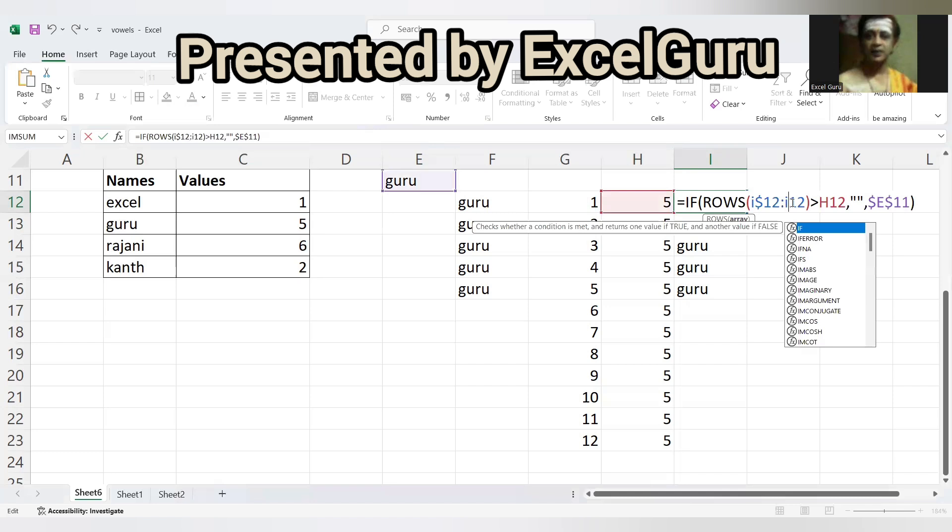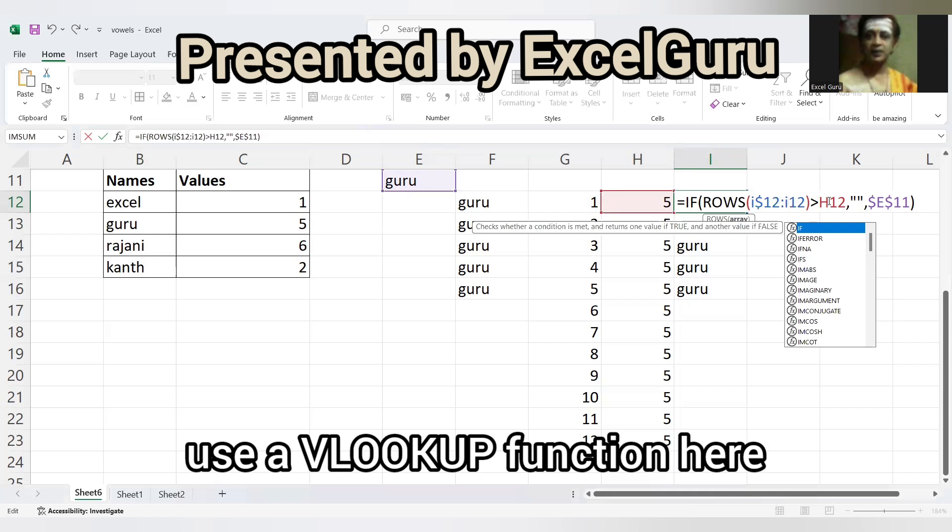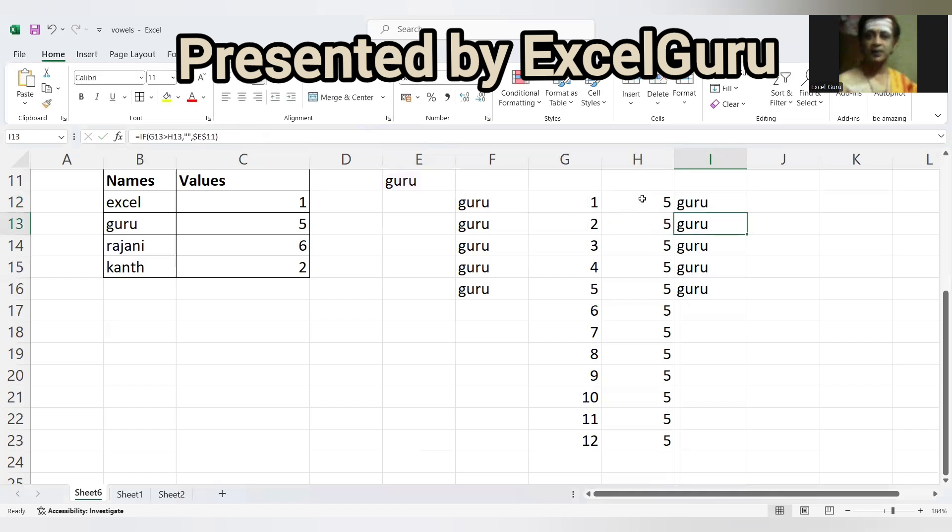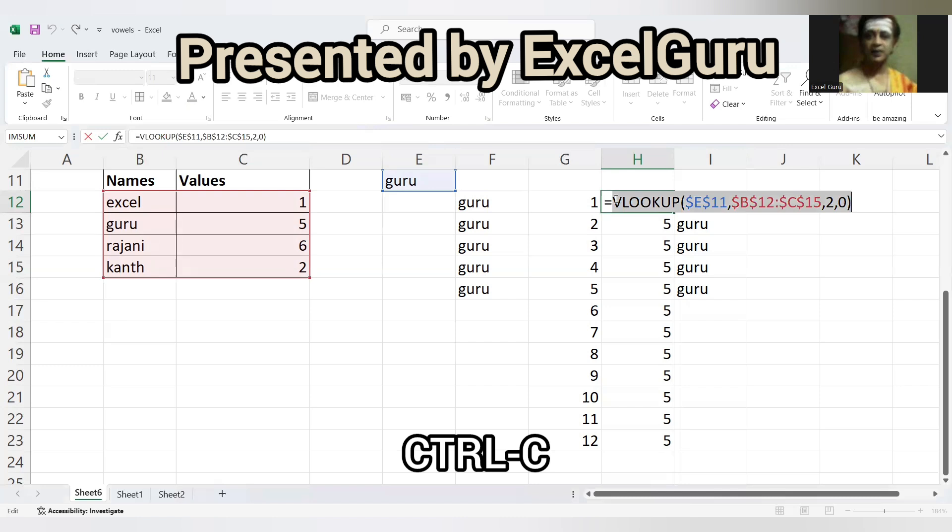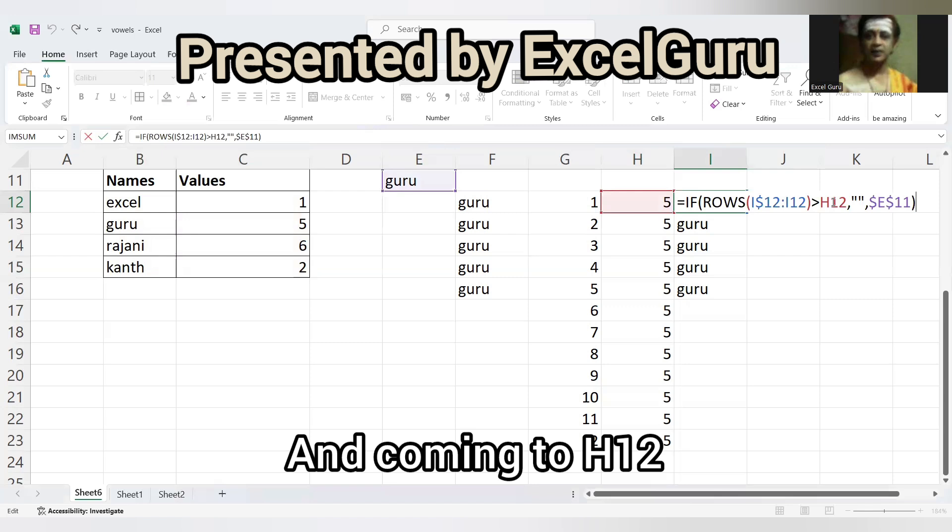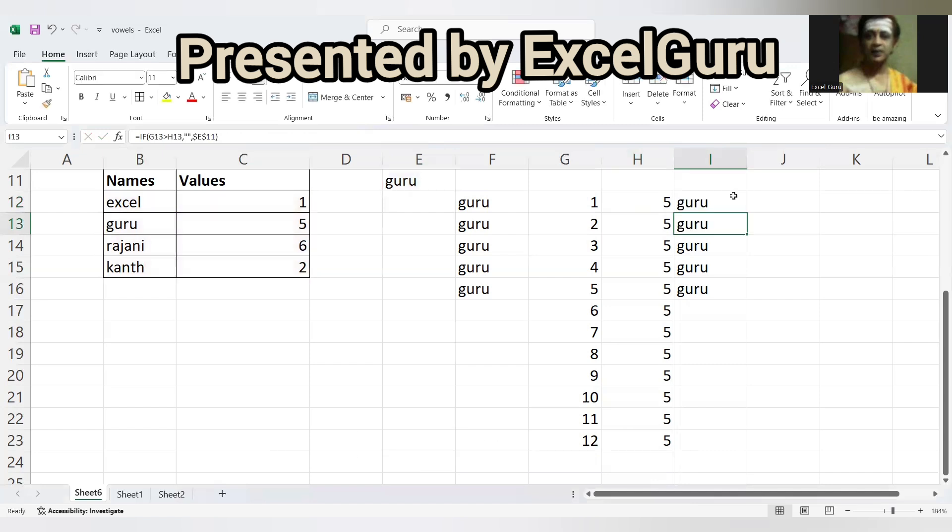But I use I instead of G12, I use I here also. This row is greater than H12. Here I will use a VLOOKUP function, enter. F2, copy the formula from here, control C, escape. F2 and coming to H12, select it, control V. That's it, the formula. Double click, that's it.